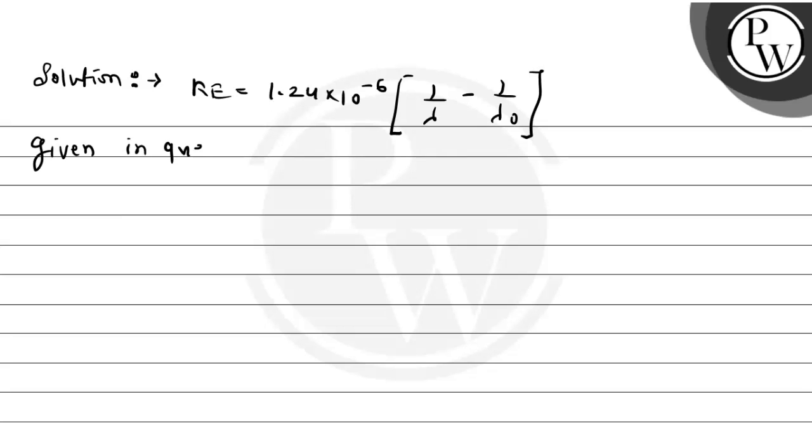Given in question, lambda equals to 1800 angstrom. Convert this to 1800 into 10 to the power minus 10 meter, which equals 18 into 10 to the power minus 8 meter.